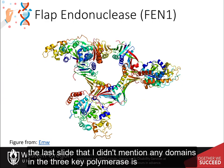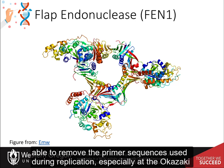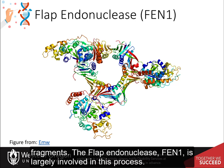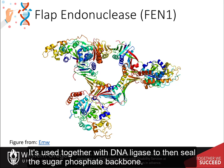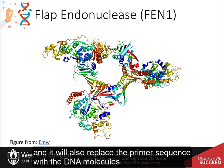You may have noticed that none of the three key polymerases have 5' to 3' exonuclease activity. So polymerase alpha, epsilon, and delta are not able to remove the primer sequences used during replication, especially at the Okazaki fragments. The flap endonuclease FEN1 is largely involved in this process. It is used together with DNA ligase to seal the sugar-phosphate backbone, removing the primer sequence and replacing it with DNA molecules.